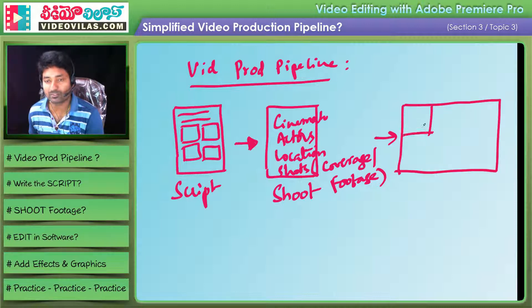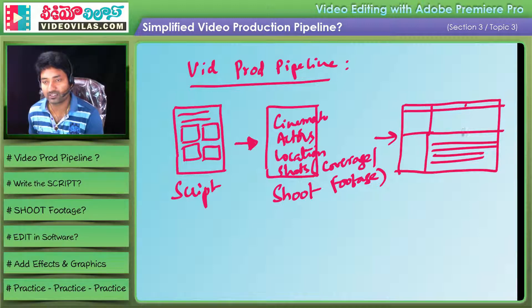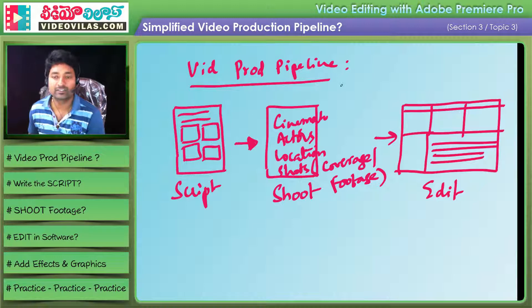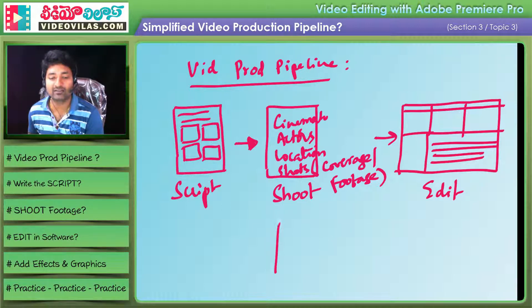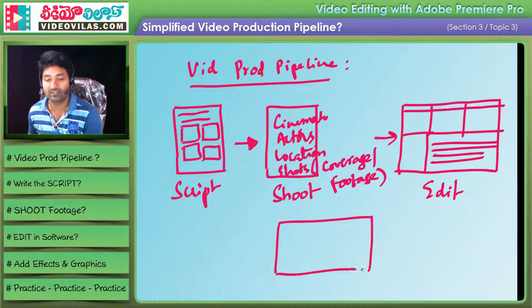In editing we look at Premiere, the project panel, effects, and the timeline. This is the editing software used in the production pipeline, and the final step is video delivery.